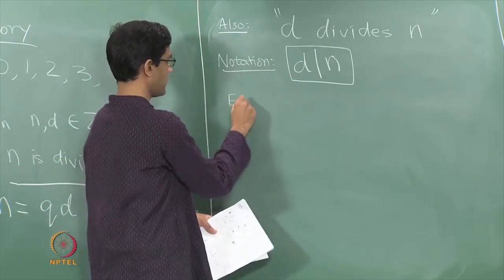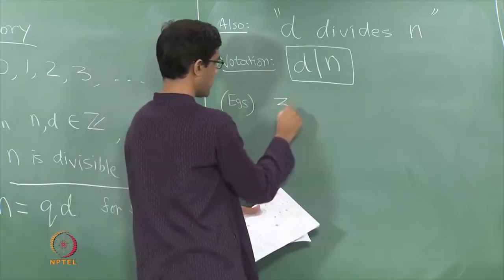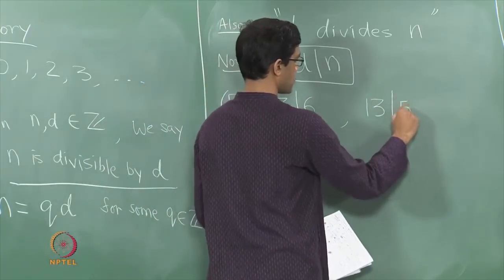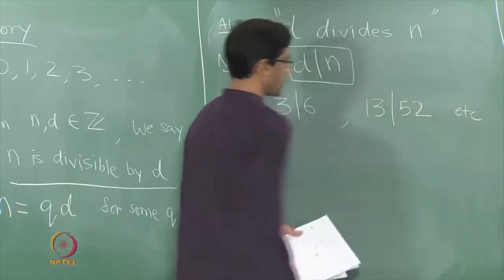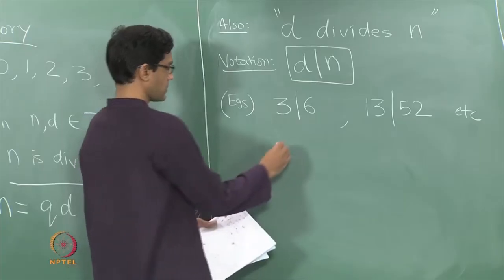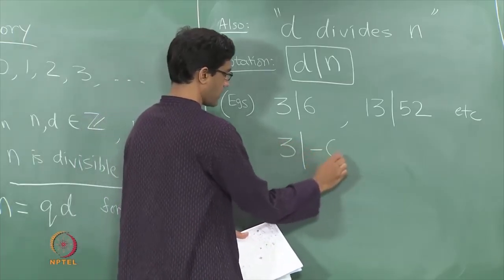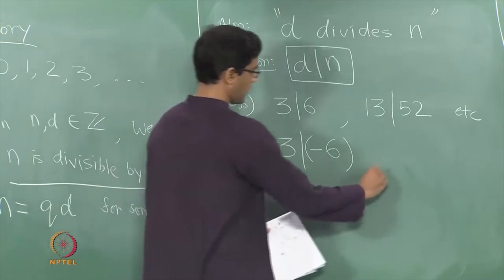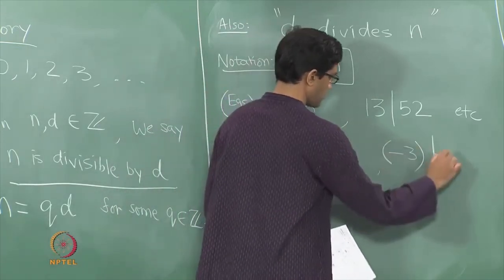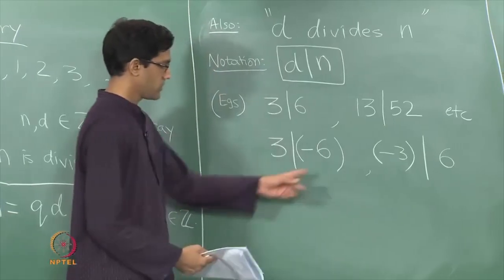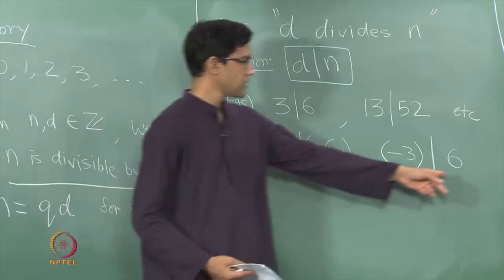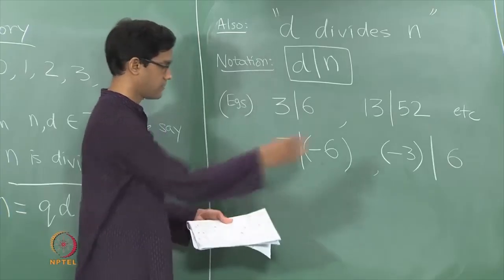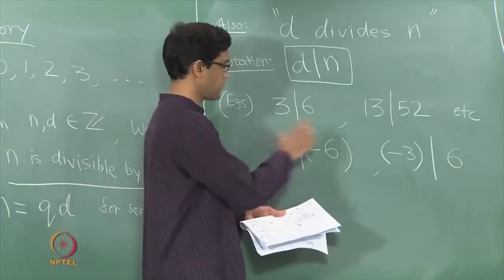For examples: 3 divides 6 because 6 can be written as 3 times 2; 13 divides 52 because 52 is 13 times 4, and so on. It is also interesting to keep in mind that these numbers could be negative. For instance, 3 divides −6, and similarly −3 also divides 6, because −6 = 3 × (−2) and 6 = (−3) × (−2).